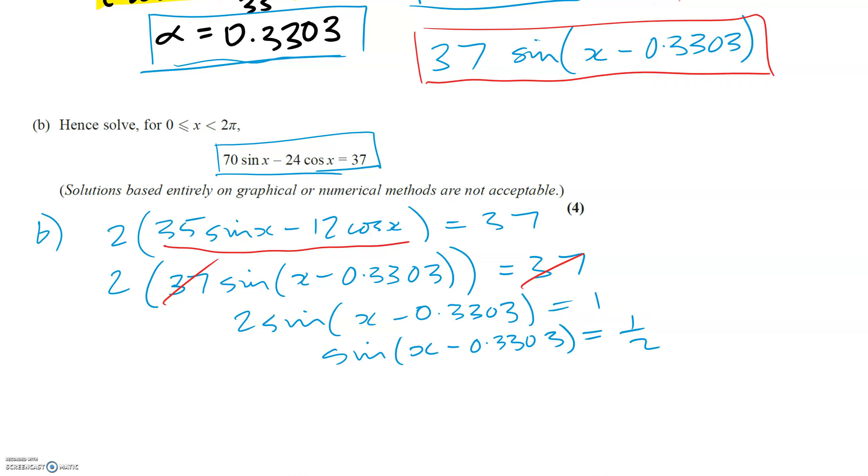So if we carry on going, the 37 is going to cancel here. So we'll have 2 sin(x minus 0.3303) equals 1. And so sin of this is going to equal a half. And just solve as normal now. Do inverse sine on your calculators of a half, although you might already know that that is 30 degrees or pi over 6 because we need to be in radians for this. If you use the cast diagram, sign is positive. So we want this and this. Pi over 6 and pi over 6. So we've got that one. That one will be 5 pi over 6.